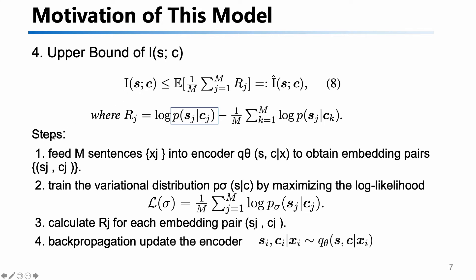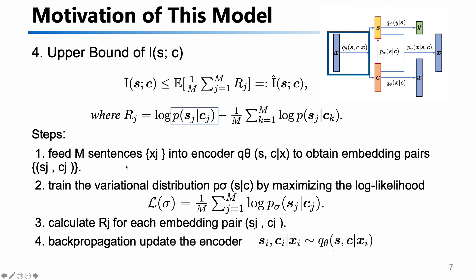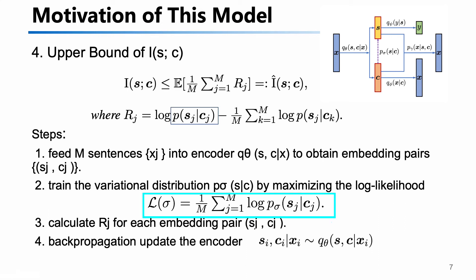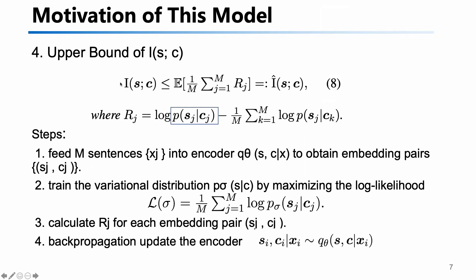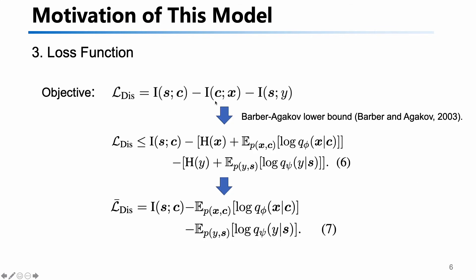We use four steps. The first is we feed m sentences x into the encoder, and after the encoder we get m pairs of sj and cj for each sentence — this is the output of the encoder. We then train a network using the pairs of embeddings by maximizing the log-likelihood function. After training the network, we get this item, calculate rj, and do back-propagation because we already have all the mutual information items and can back-propagate the input.